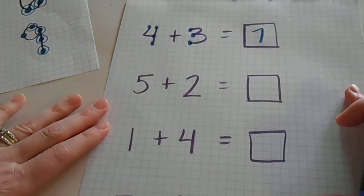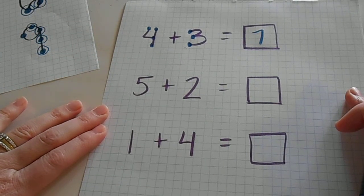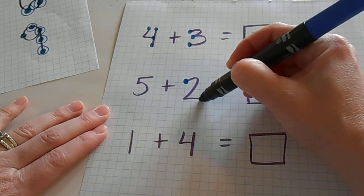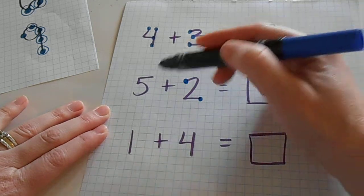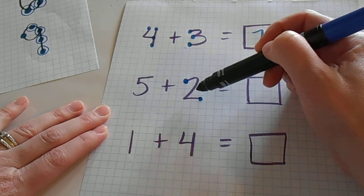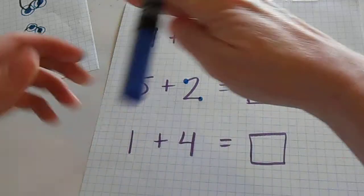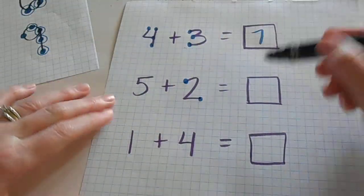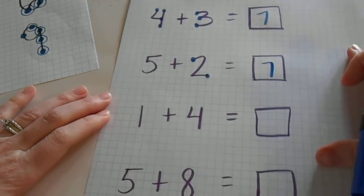Once you get a little bit more advanced in learning how to add, you can simply just put the dots on the smaller of the two numbers. We know that this is five, so we can just start with five and count on with the dots that are on the two. So we would count five, six, seven. And just continue adding like that once it gets a little bit more advanced.